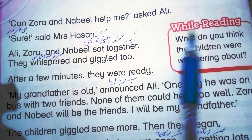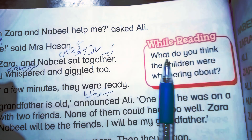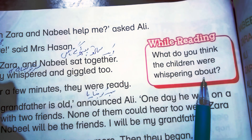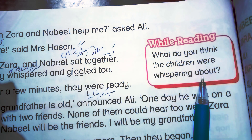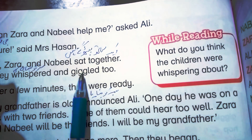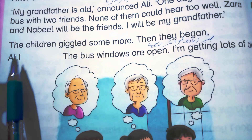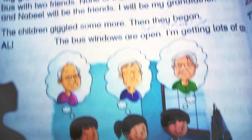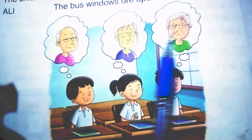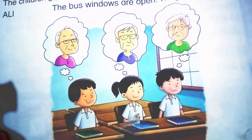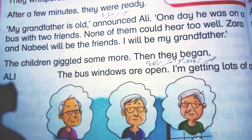While reading, the teacher can ask: 'What do you think the children whispered about?' They whispered because they had built a character and a plan together — that is why they were smiling. As we can see in the picture, the three children — Ali as grandfather and Zara and Nubil as friends — have built their characters together.